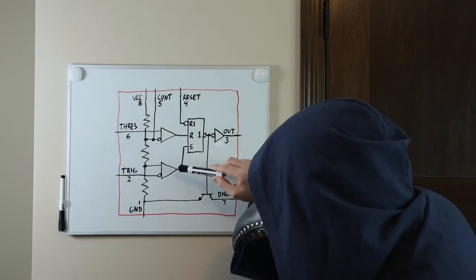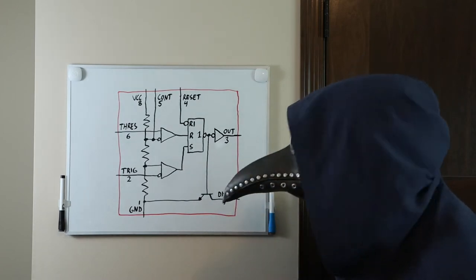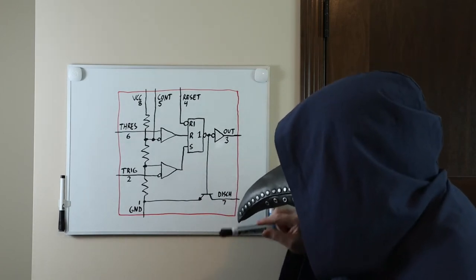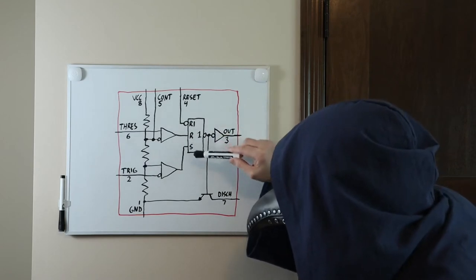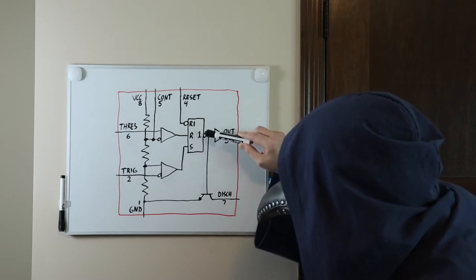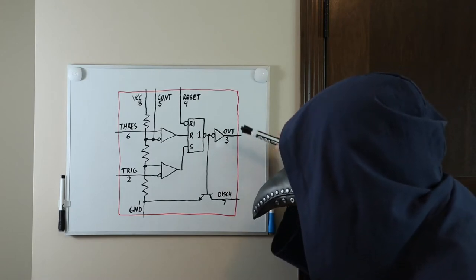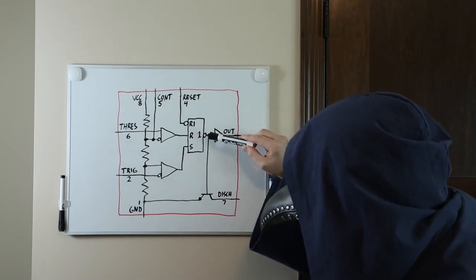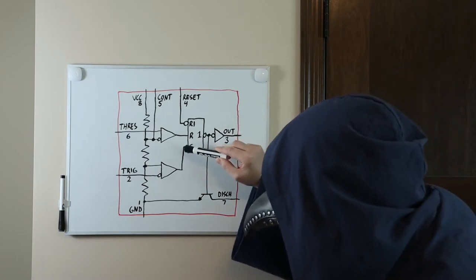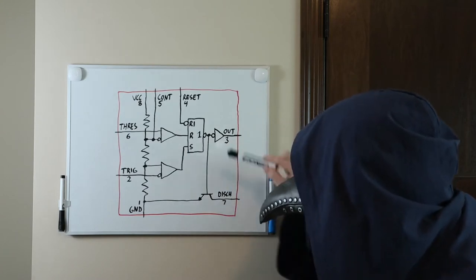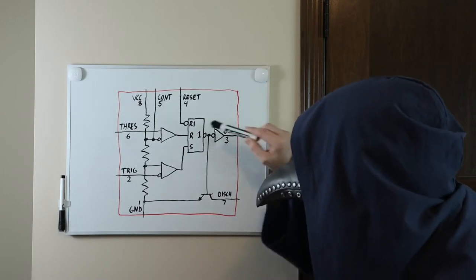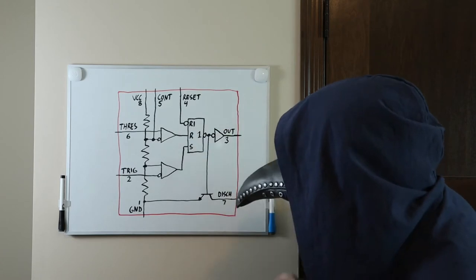The outputs of the comparators are connected to the inputs of an SR flip-flop. The little circle here indicates that the output of the flip-flop is inverted. Because of this, the output, right here, will go low when the set, or S, input goes high, and the output will go high when the reset, or R, input goes high.